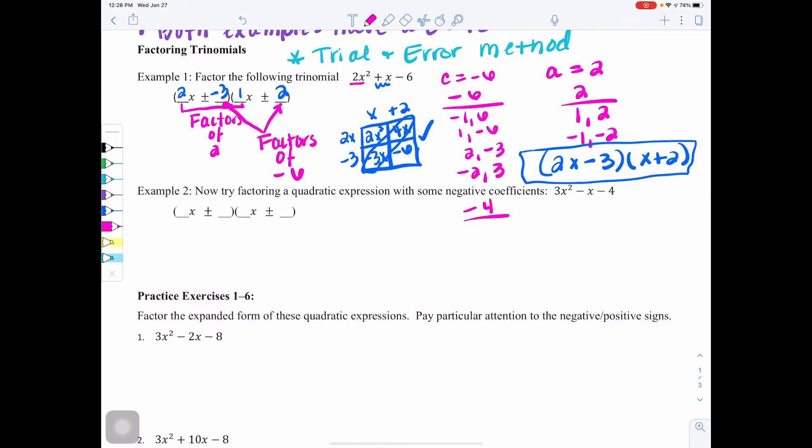So we're still going to follow the same process. My c value is a negative 4. So I'm going to list factor pairs of negative 4. So 1 and negative 4, negative 1 and 4, and then we have 2 and negative 2. But because my coefficient or my a value is not a 1, I also need to list my factor pairs of 3. Okay? So I could have 1 and 3, negative 1 and negative 3.